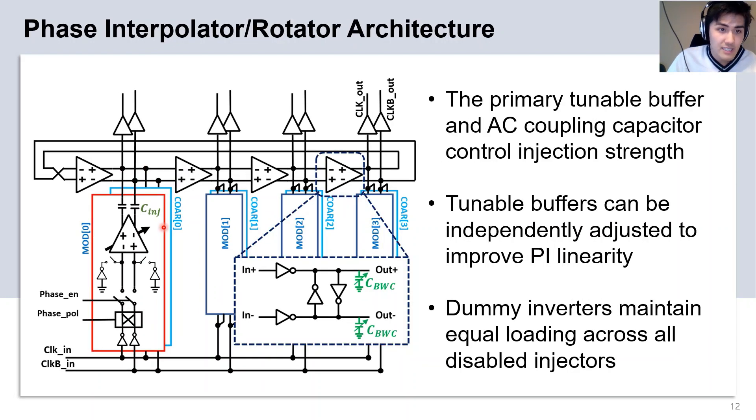Inside each injector, the injection strength is controlled by the AC coupling capacitor and the primary buffer. This buffer is tunable to improve PI linearity. The dummy inverters here are also implemented to maintain equal loading across all the disabled injectors.